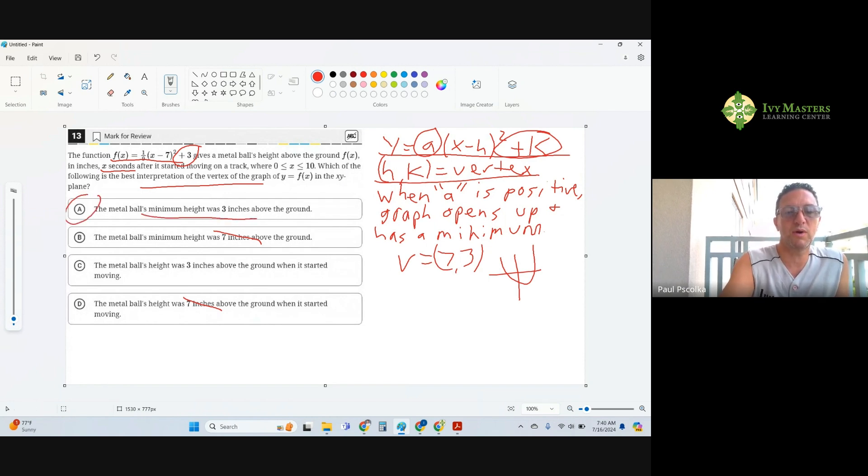This is when it started moving; that's going to be when time is zero. Then you get negative seven squared, that's 49 times 1/9, 49 over 9 plus 3. It's going to be a much bigger unit.